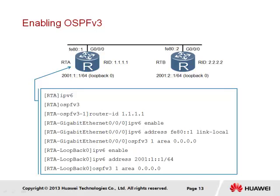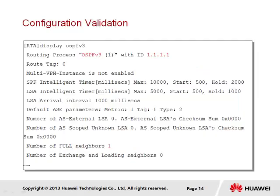We then associate the interface with process ID 1 and area 0. An IPv6 global unicast address can also be configured on interface Loopback 0 and advertised through OSPF v3 by enabling IPv6, configuring a global unicast address on the interface, and associating it with area 0. Once basic OSPF v3 configuration is complete, the command display OSPF v3 can be used to view the results. Most notably, the process is enabled with the router assigned router ID 1.1.1.1. A full adjacency with the neighbor is validated by the number of full neighbors showing as 1.